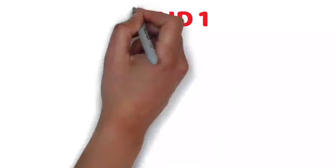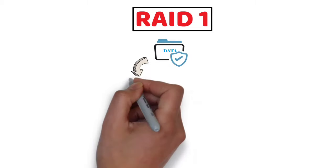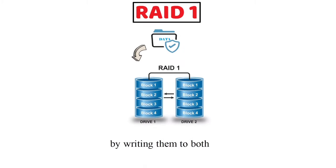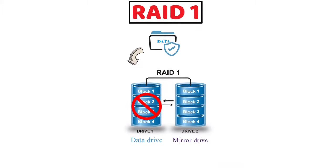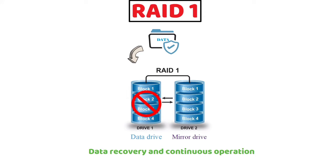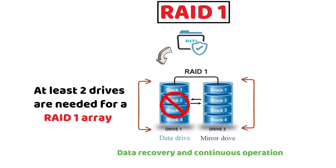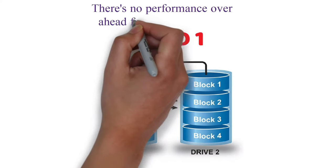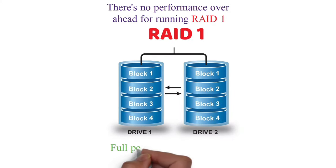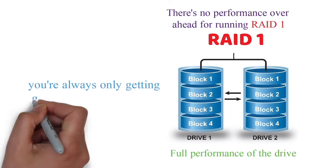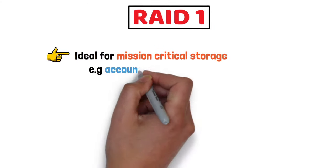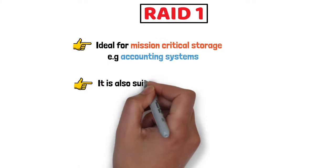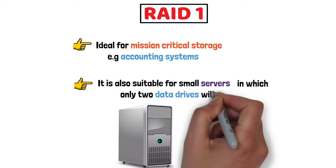In RAID 1 configuration, data is distributed to two disks by writing it to both the data drive and a mirror drive. If the drive fails, the controller uses either the data drive or the mirror drive for data recovery and continuous operation. At least two drives are needed for a RAID 1 array. There is no performance overhead for running RAID 1, so you still get the full performance of the drive, but you're always getting only half the capacity. RAID 1 is ideal for mission-critical storage such as accounting systems, and for small servers using only two data drives.